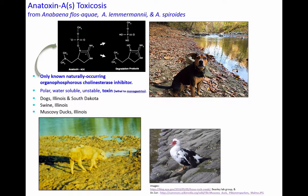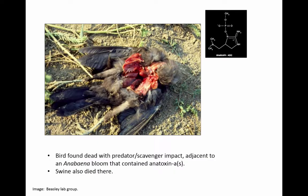Anatoxin-A(S) has an entirely different structure. It's not a nicotinic agent but a cholinesterase inhibitor — the only known naturally occurring organophosphorus cholinesterase inhibitor. It is very water soluble and cannot cross certain membranes, so it cannot get into the brain or retina and does not inhibit cholinesterase there — it works strictly in the periphery. Poisoning has been seen in dogs, swine, ducks, and other species. A bird was photographed that died right beside an algal bloom with apparent scavenger impact, likely due to the rapid action of anatoxin-A(S).